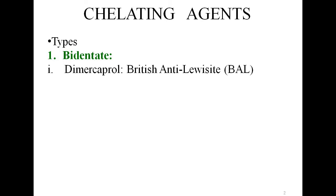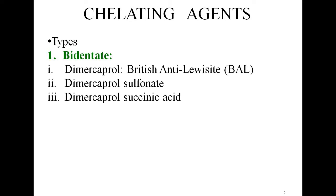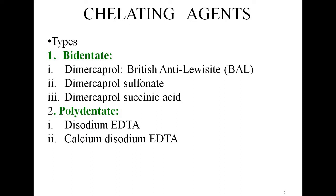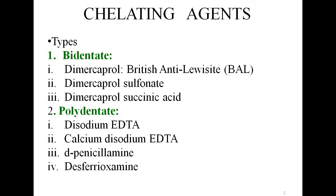Moving on to the types of chelating agents — based on the number of electronegative groups they have, they are broadly divided into bidentate and polydentate. Under the bidentate chelating agents we have dimercaprol.